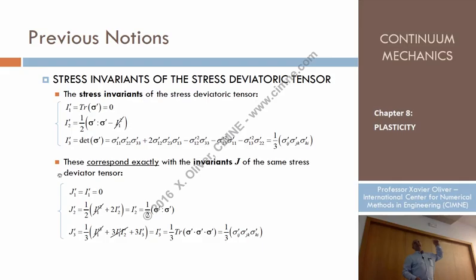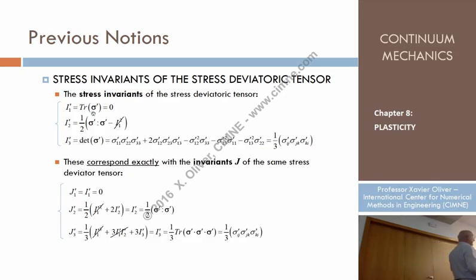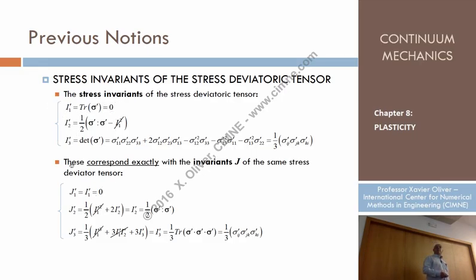We can also compute the J-invariants of the deviatoric part of the stresses. Note that for a deviatoric stress tensor, I1-prime — which is the trace — is zero by construction; it can be proven that the trace of any deviatoric tensor is zero. So I1-prime equals zero, and J1-prime also equals zero. But the other invariants are no longer zero.